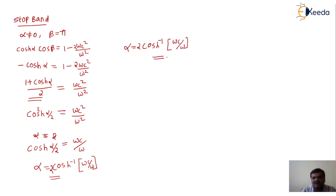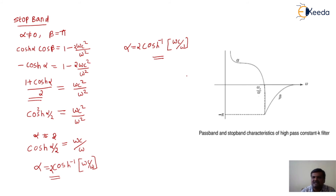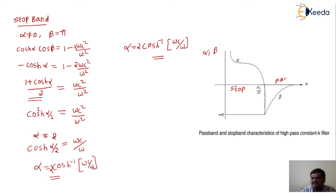This is the value of α for the high-pass filter in the stopband. For comparison, in the low-pass filter the corresponding value uses ω/ωc instead of ωc/ω. This figure shows the passband and stopband characteristics of the high-pass filter — the nature of α and β. Below ωc it acts as a stopband: α is present and β equals 0, meaning no wave propagates. Above ωc it acts as a passband: β is present and α equals 0, allowing desired frequencies to pass.